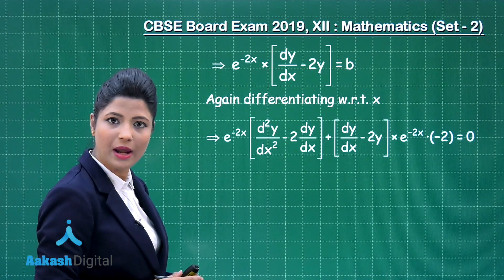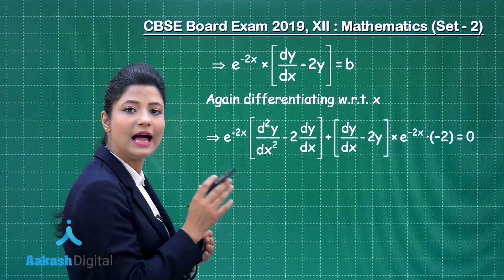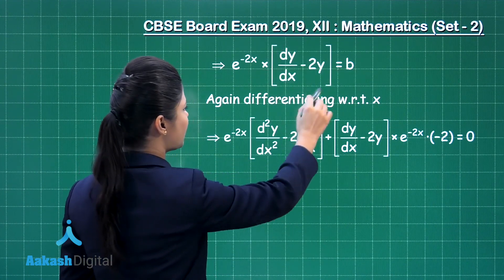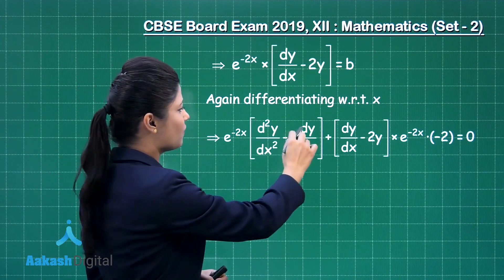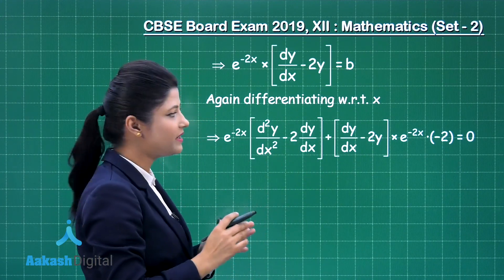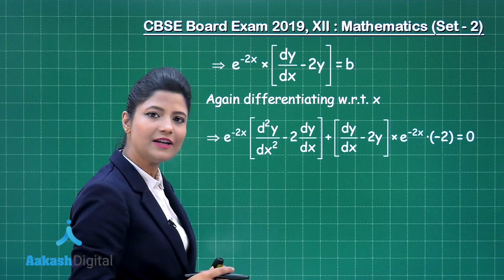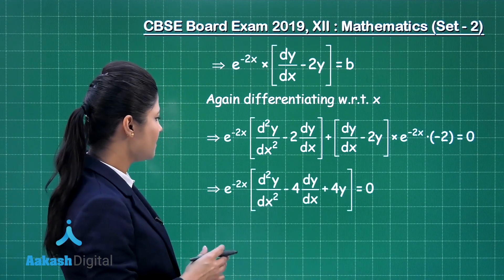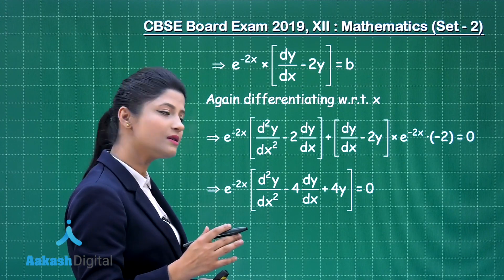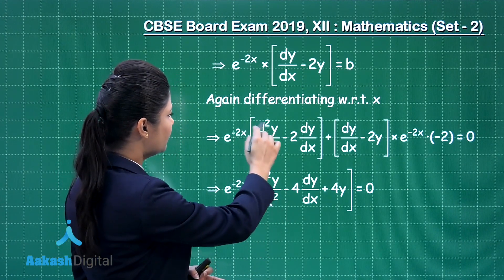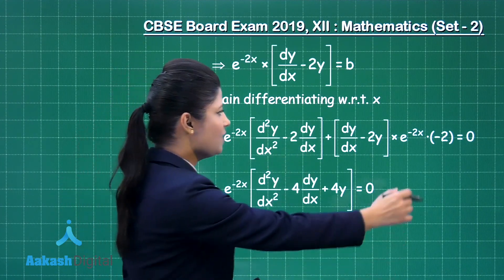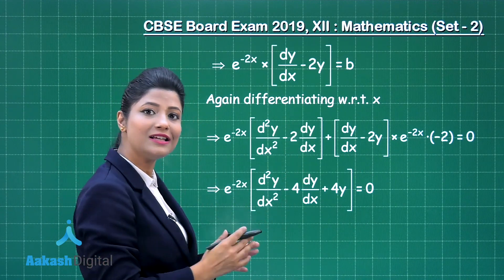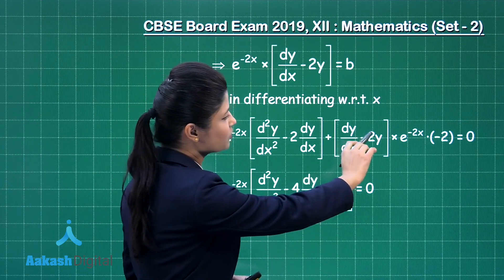Now, differentiating both sides with respect to x again and applying the product rule: e^(-2x) * (d²y/dx² - 2*dy/dx) + (dy/dx - 2y) * e^(-2x) * (-2) = 0, since differentiating the constant b with respect to x gives 0. Taking e^(-2x) as common and simplifying: d²y/dx² - 2*dy/dx - 2*dy/dx + 4y = 0, which gives d²y/dx² - 4*dy/dx + 4y = 0.